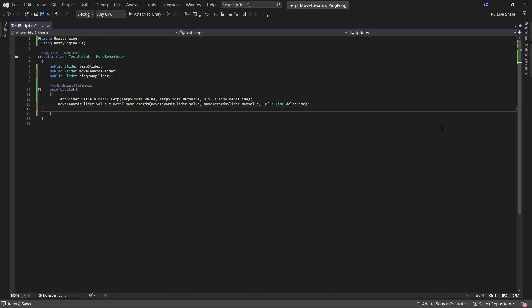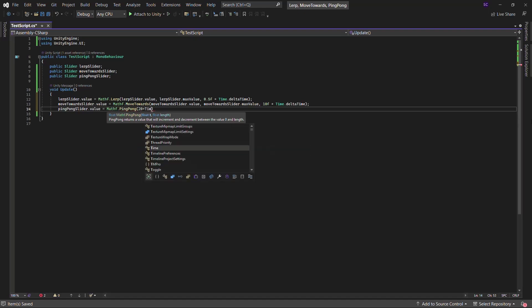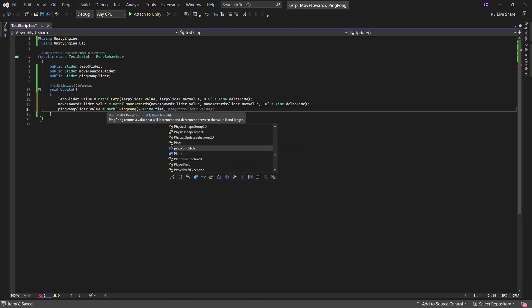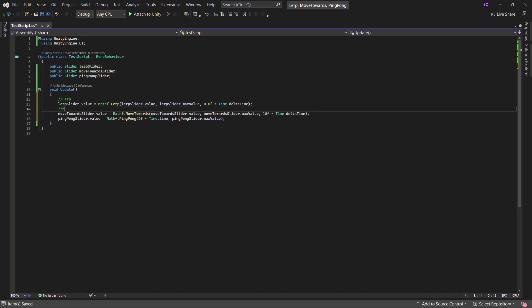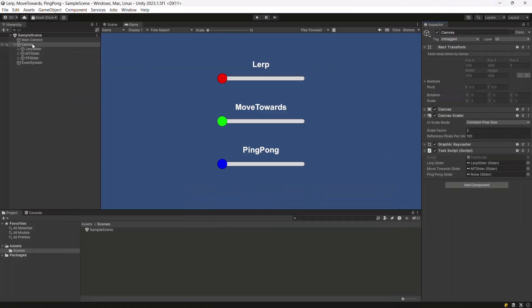So, we will use time.time as t because time increases continuously at the same rate. Multiply time.time by 20 to get a speed of 20 units per second. The length will be the slider's max value. Go back to the scene, assign the slider, hit play, and you will see the handle moving in a ping-pong motion.